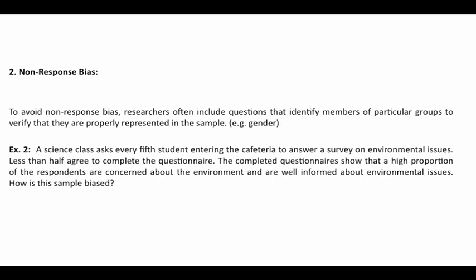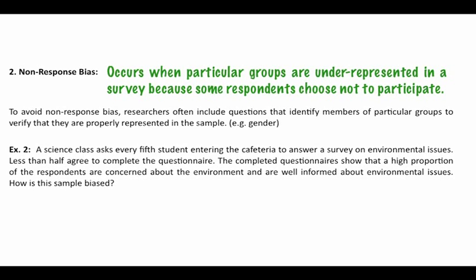Non-response bias is a different kind of bias. This occurs when particular groups are underrepresented in a survey because some people choose not to participate. For example, when a doctor's office leaves a survey on a desktop and says fill this out if you're interested, only certain types of people are going to fill it out, and most people will just ignore it altogether.